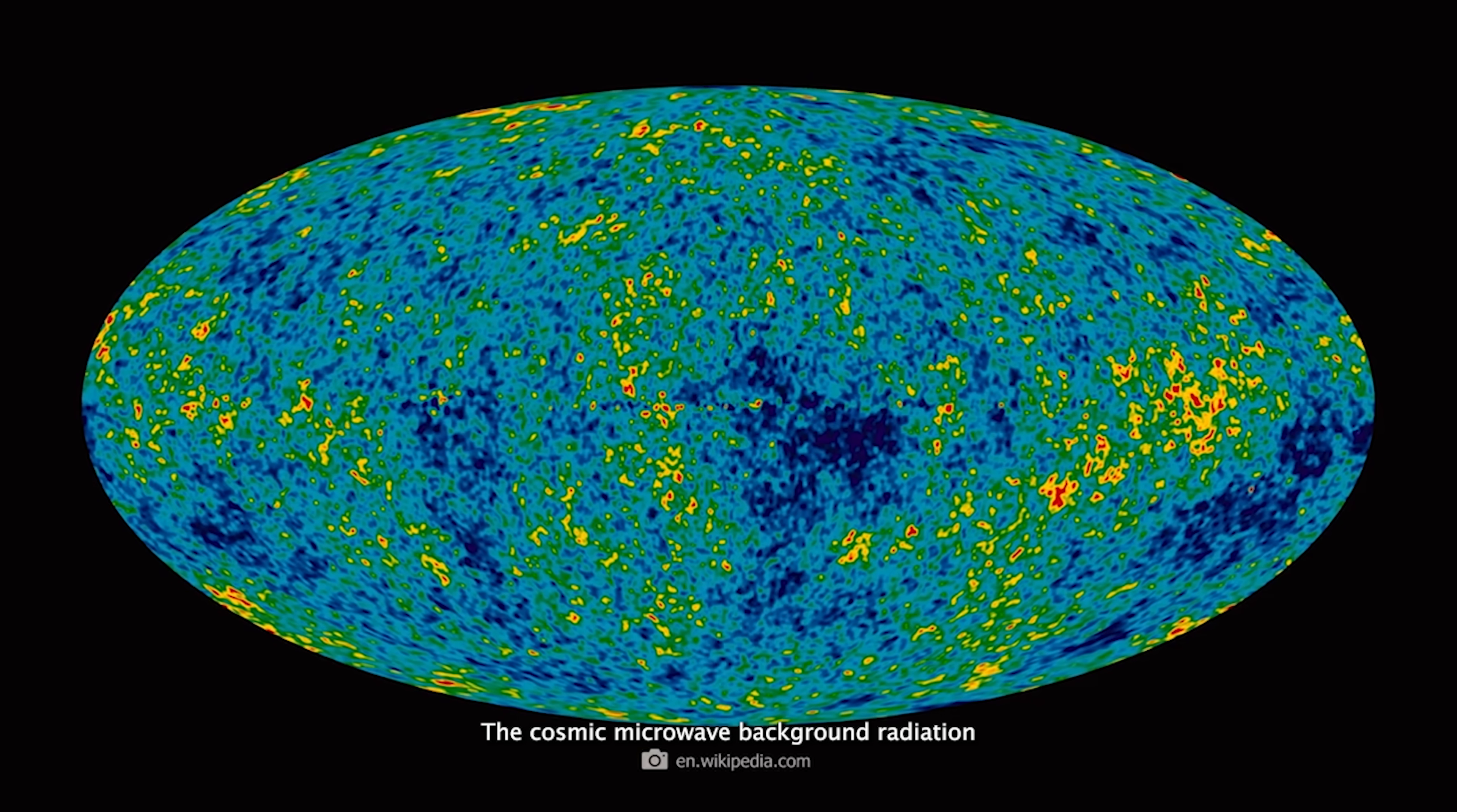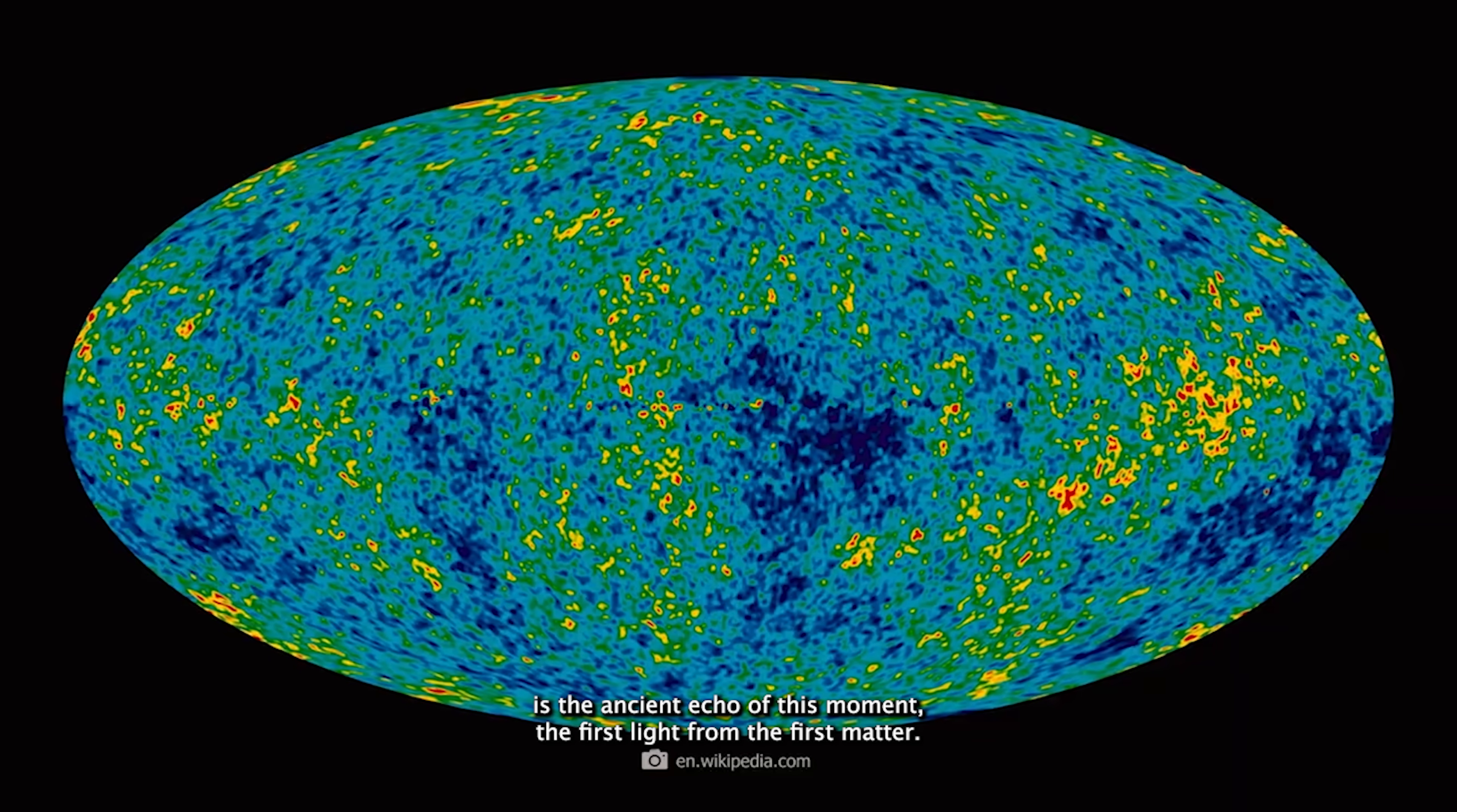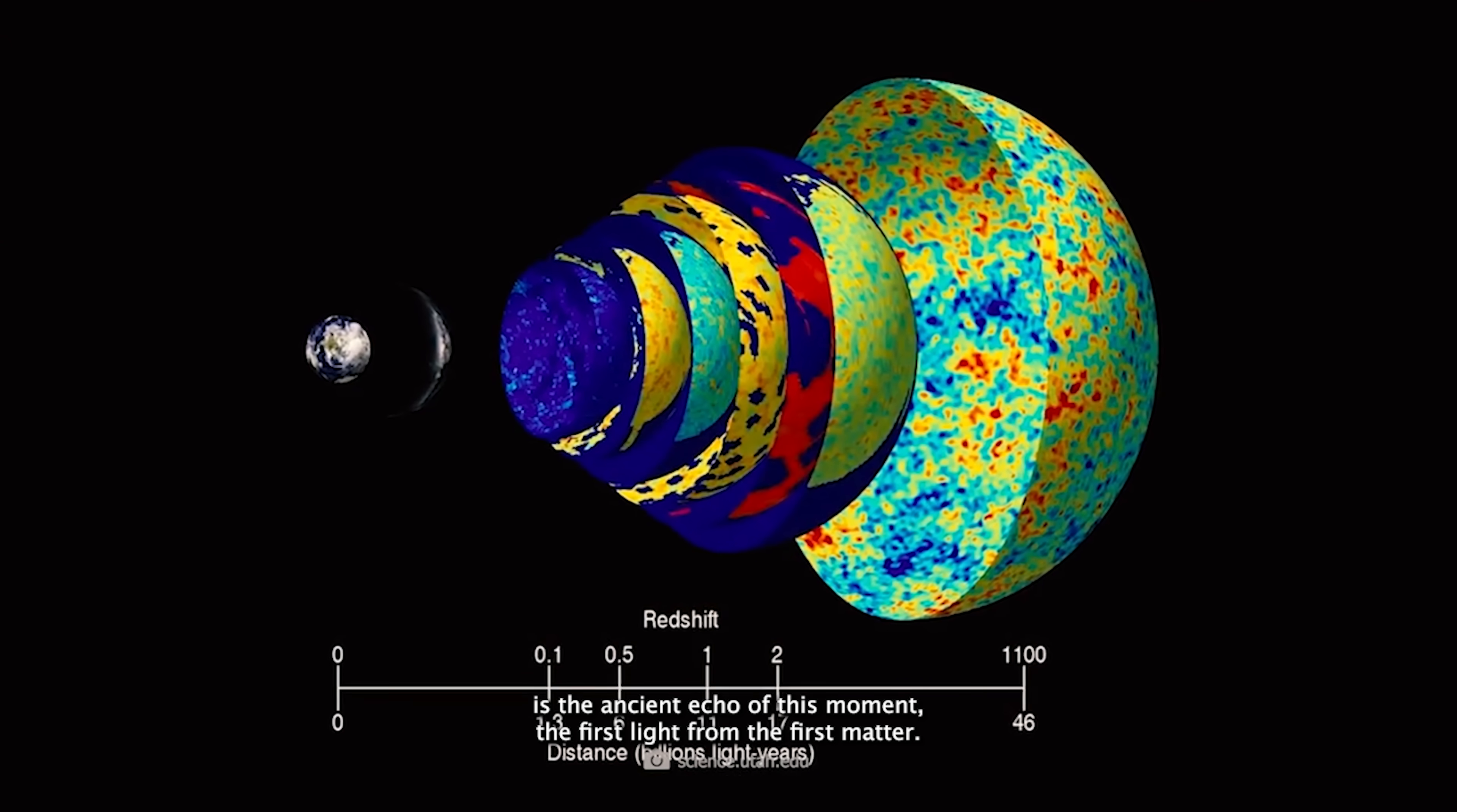The cosmic microwave background radiation, that faint glow we detect from every direction, is the ancient echo of this moment. The first light from the first matter.